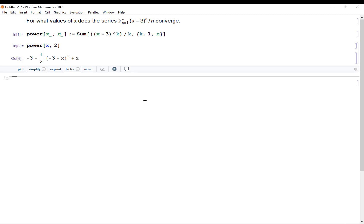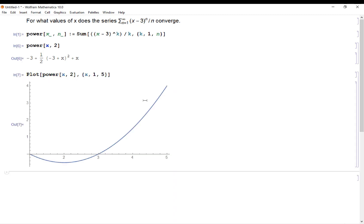That's not always clear, but what I can do here is plot these things and maybe get kind of a visual of what's going on for different values of x. So if I let x go from 1 to 5, for example, with power x2, so that would be the second partial sum, I get this nice quadratic.